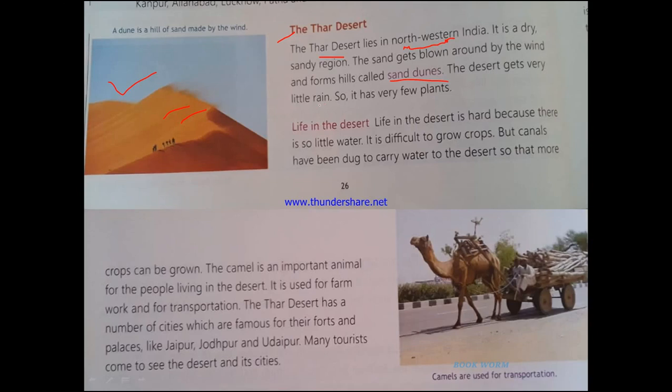The desert gets very little rain, that is why it is dry and there is a lot of sand. Very few plants grow there because plants need water to survive. Due to little rain in the desert, the sand is dry and there is very little water, so very few plants grow there.